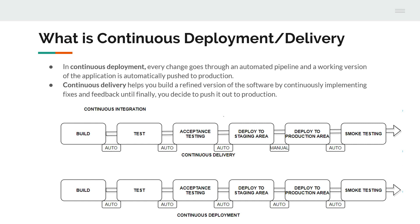Once the production deployment is completed, automated smoke tests are run to test the important functionalities. For example, if we take Amazon.com as our project, we would check the login functionality, whether you can add a product to the cart, and whether the checkout functionality is working properly. All these smoke tests are done automatically using tools like Selenium or QTP. In continuous deployment, all stages from build through smoke testing are done automatically with no manual intervention.